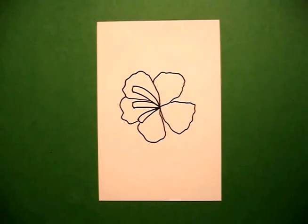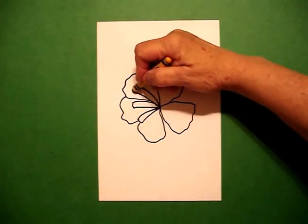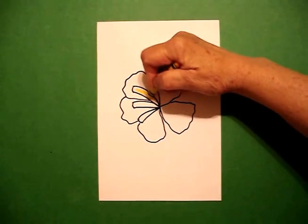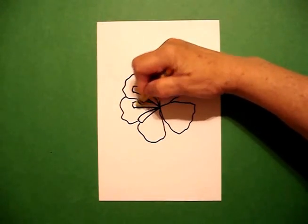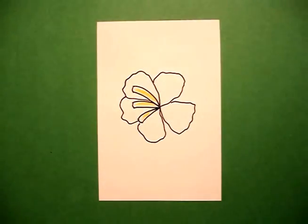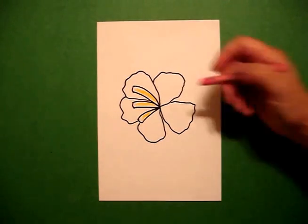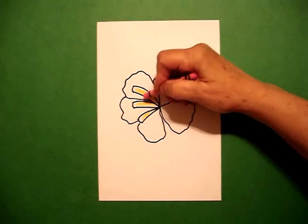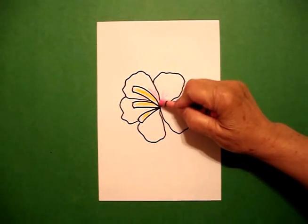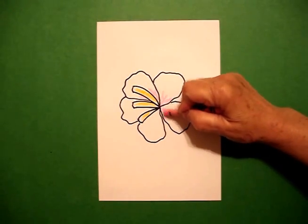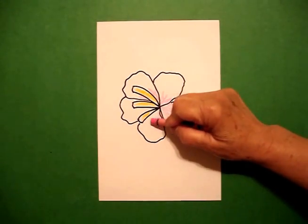Now we're ready to color. For coloring, I'm just going to use a yellow-orange for the pistils. That's the center part. I take a pink and I'm just going to color right down here at the base of each one of my petals.